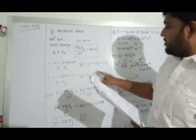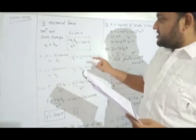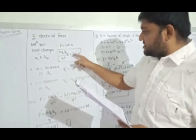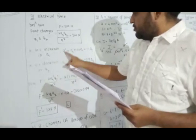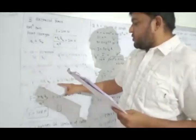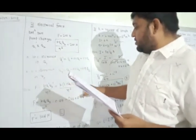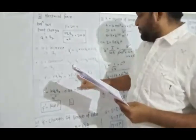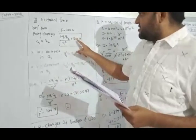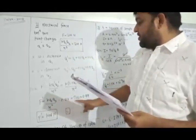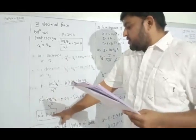Q1' is 1.1·Q1 and Q2' is 0.9·Q2 (decreased by 10%). The separation remains the same R. New force F' = K·(1.1·Q1)·(0.9·Q2)/R² = 0.99·K·Q1·Q2/R². The initial force was 200 N, so F' = 200 × 0.99 = 198 Newton. Option C.